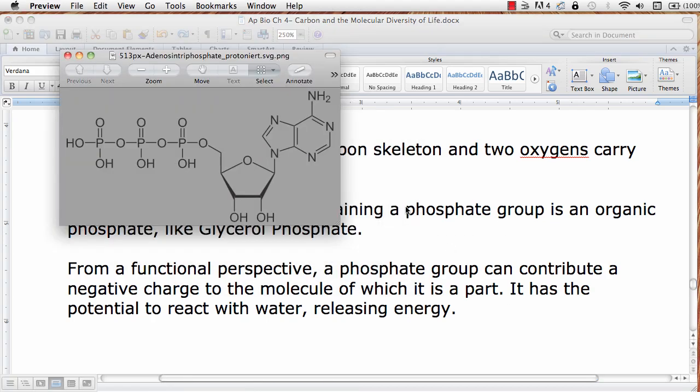An example of an inorganic phosphate would be adenosine triphosphate. Adenosine triphosphate is actually the chemical that carries energy within a cell that is used for metabolism. It's also known as ATP, the acronym for adenosine triphosphate.